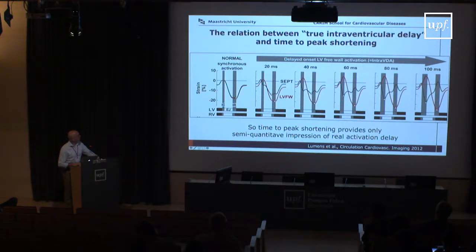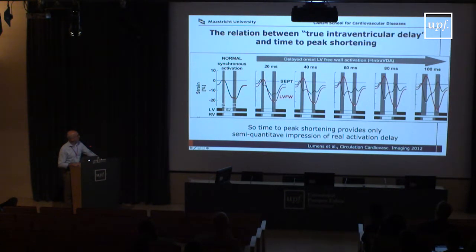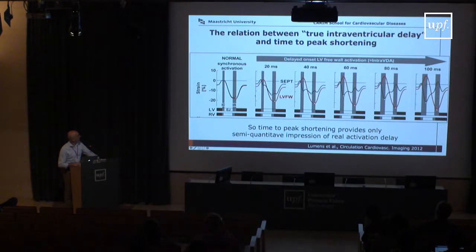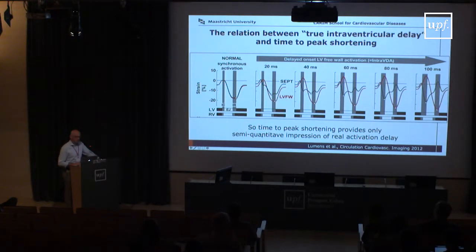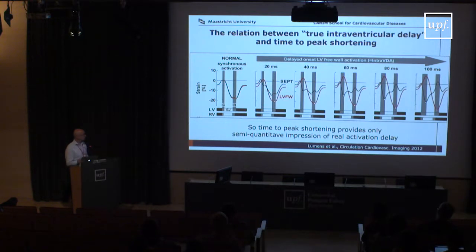Interestingly, at 40 milliseconds the time difference doesn't change much, but at 60 milliseconds, the peak shortening is now 200 milliseconds earlier rather than the 90 milliseconds seen before — a sudden jump between 40 and 60. After that it stays at 200 regardless. Because of wall interaction, peak shortening time is only a semi-quantitative expression of the real activation delay. This is an explanation for why time-to-peak shortening is a poor indicator of true synchrony.